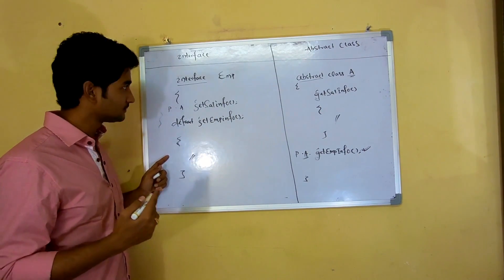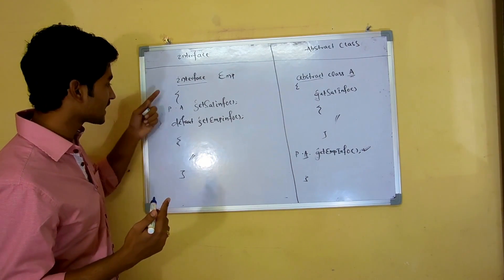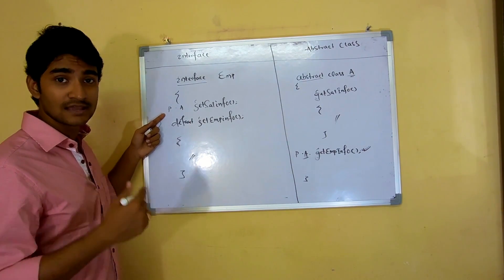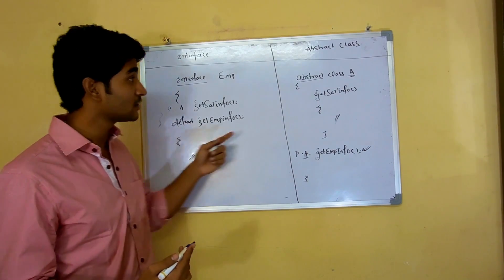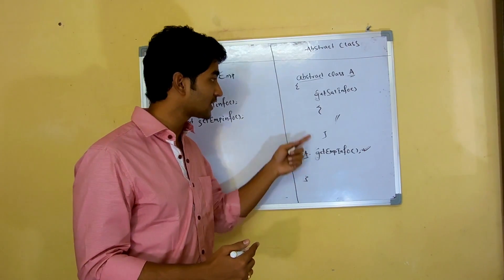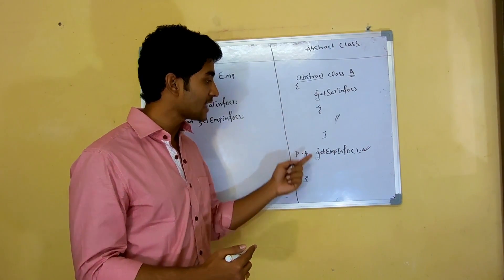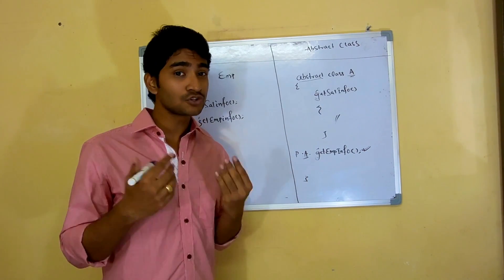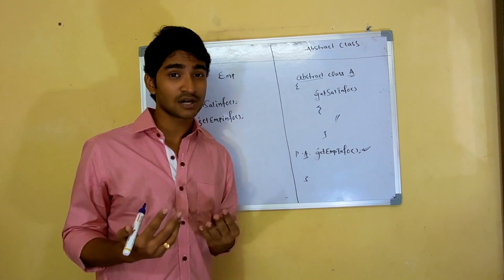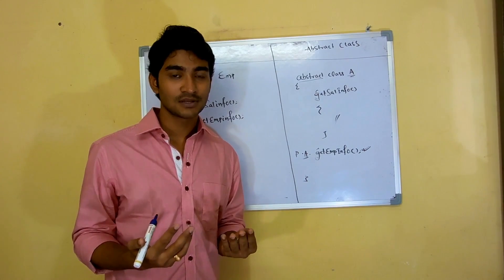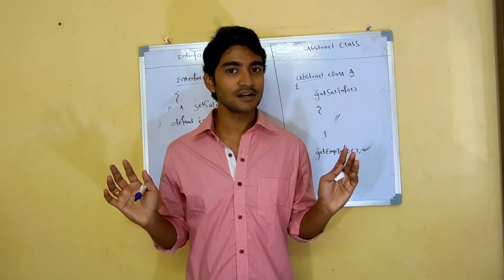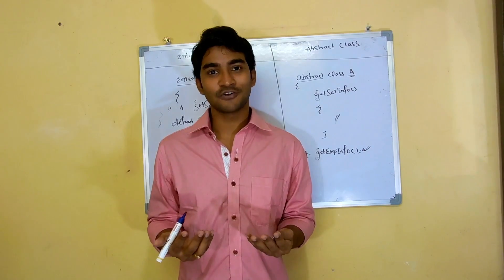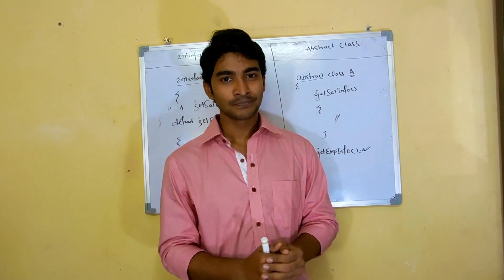So now if your interface can have both concrete and abstract methods, and your abstract class is also having concrete and abstract methods, then what is the difference? When should you go for an abstract class and when should you go for an interface? Let's understand that.